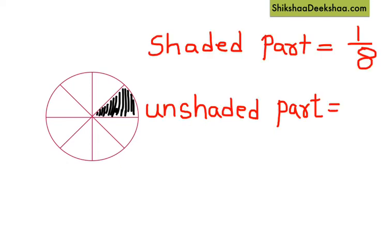The same way we can write the fraction for the unshaded part. Total number of pieces are eight, so we write eight at the bottom. At the top, we write the number of unshaded parts, which is one, two, three, four, five, six, seven — so we write seven at the top. The fraction for the unshaded part is seven by eight. I hope by now you understand how to read and write fractions. In our next video, we will understand how to compare fractions.